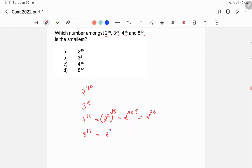Similarly, 8 raised to 12 we can write as 2 cube raised to 12, because 8 is 2 cube. Now this will come as 2 raised to 3 into 12, which is also 2 raised to 36.